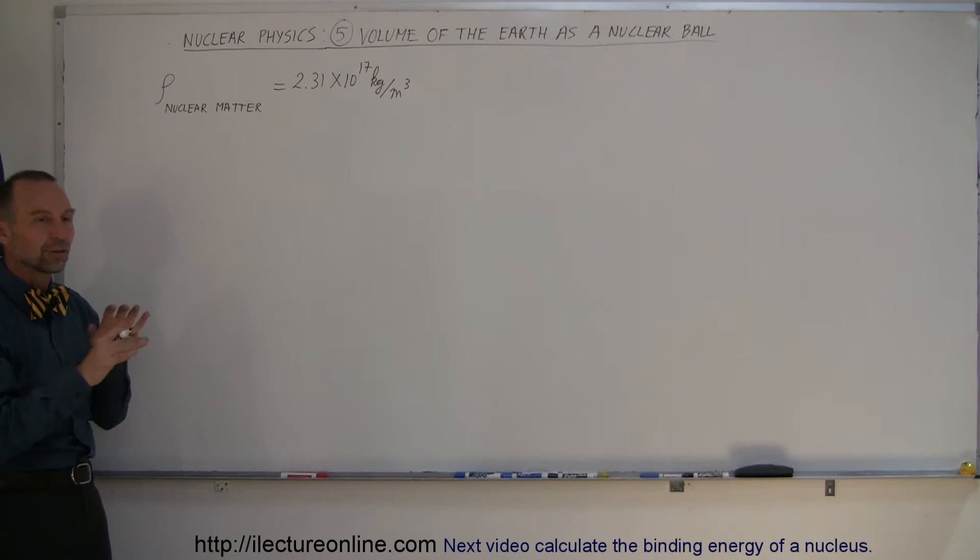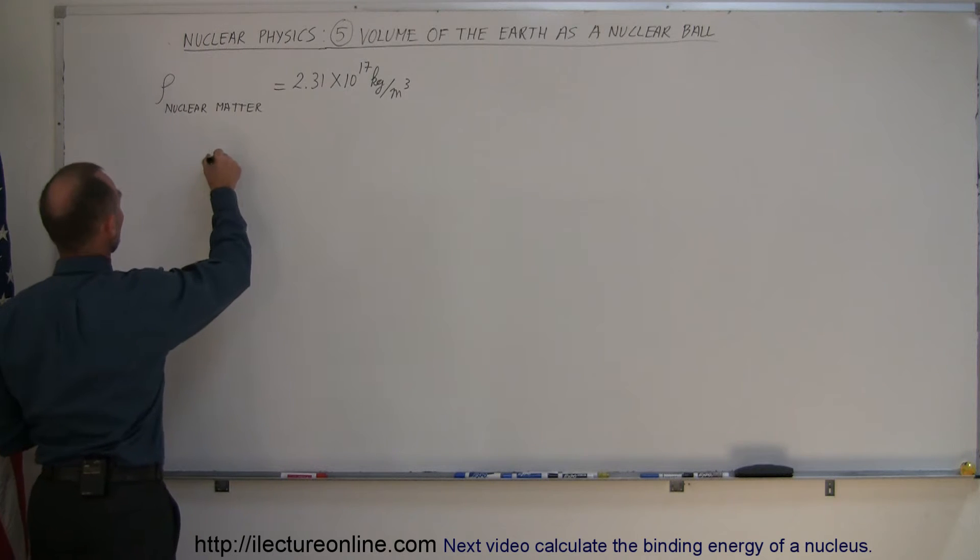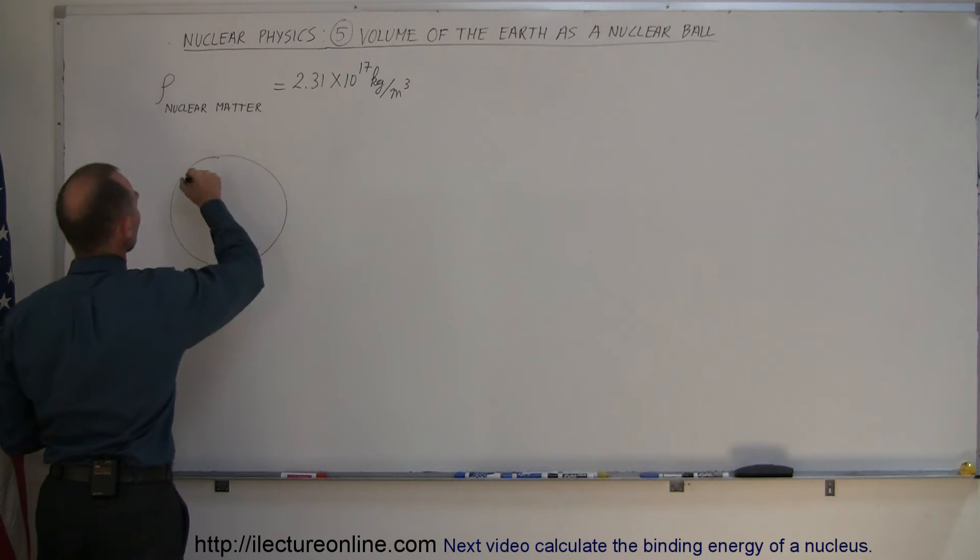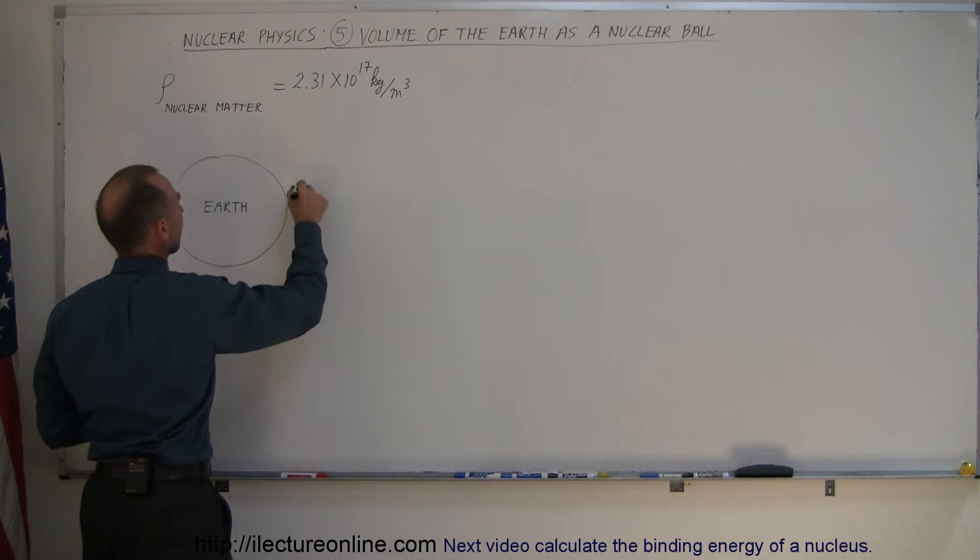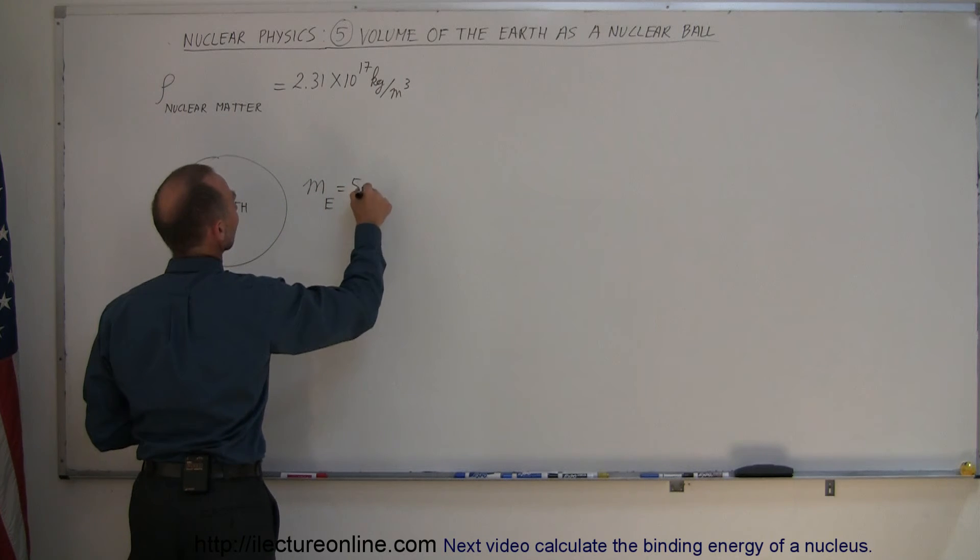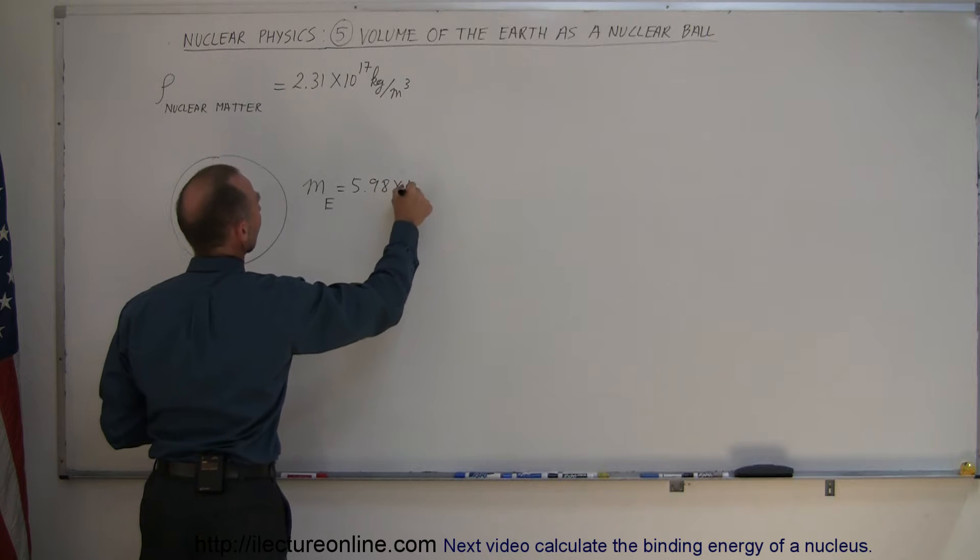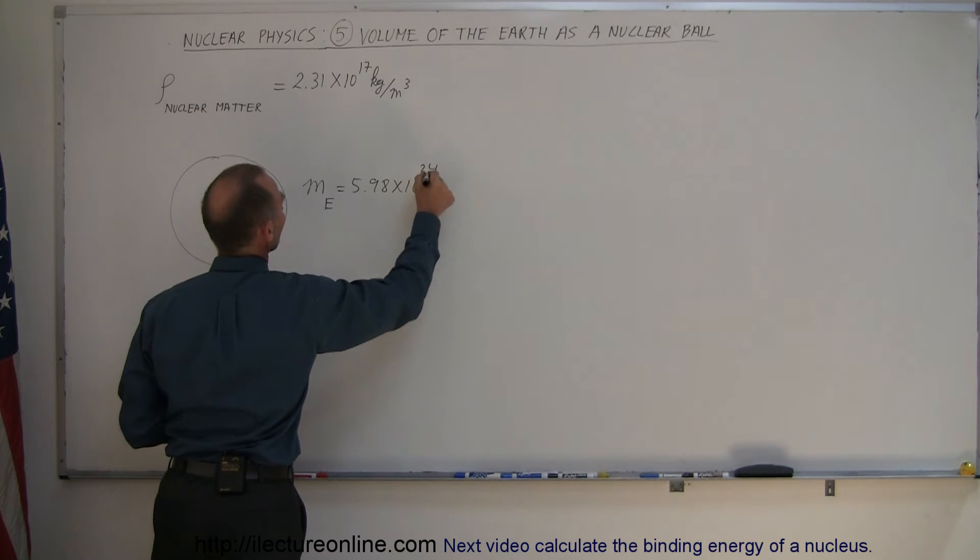Well, we know that the Earth currently has a mass. This is the Earth. The current mass of the Earth is equal to 5.98 times 10 to the 24th kilograms.